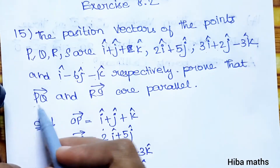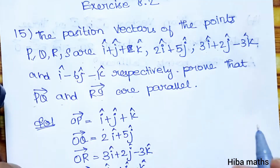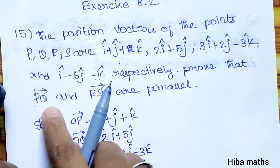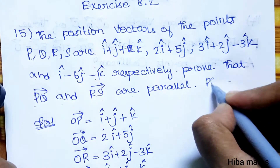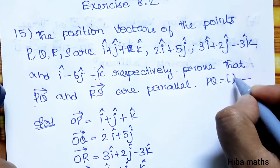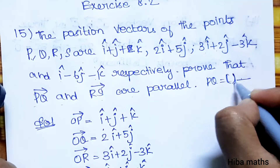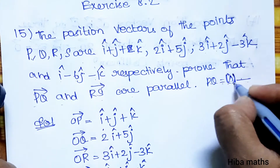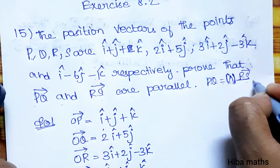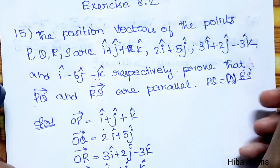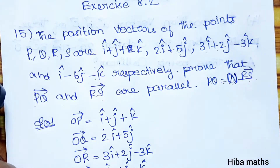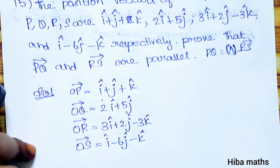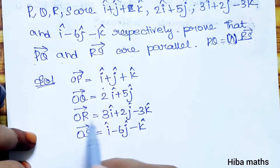We need to prove that PQ and RS are parallel. If two vectors are parallel, then PQ is equal to lambda times RS for some scalar lambda. So first, the solution uses the given position vectors OP, OQ, OR, OS.